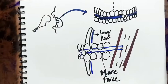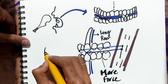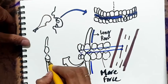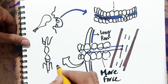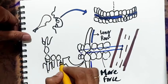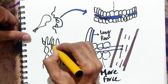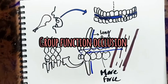But what if canines are either periodontically compromised or they are worn off? In that condition along with canines, other posterior teeth on working side may also contact. This is called group function occlusion.